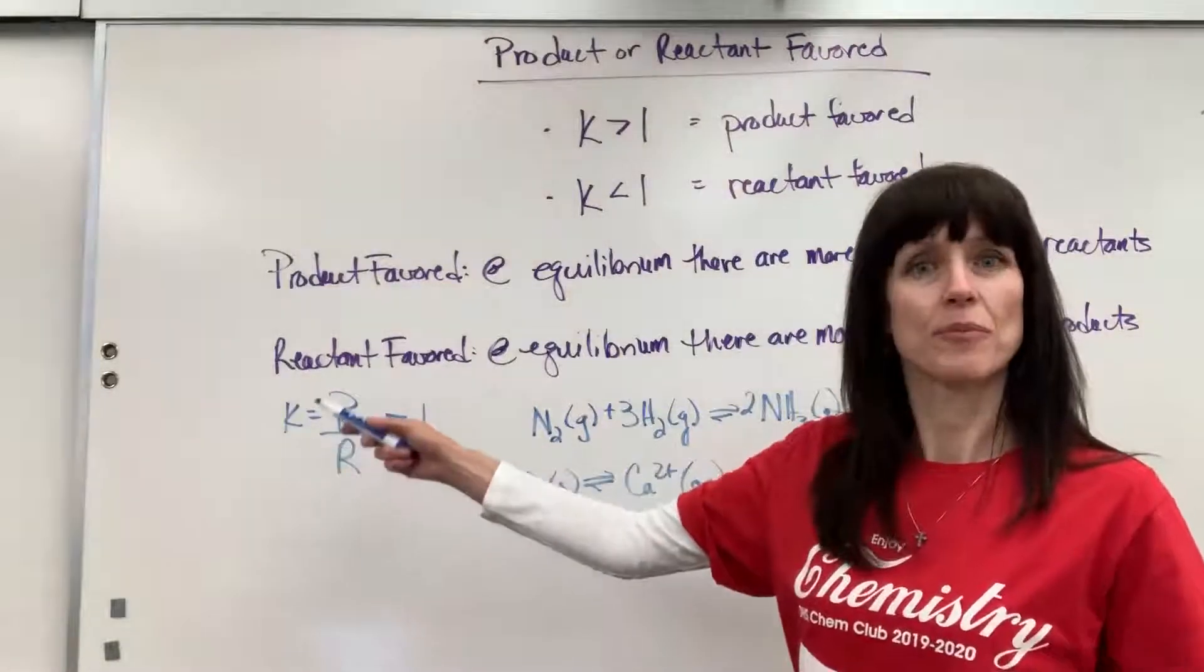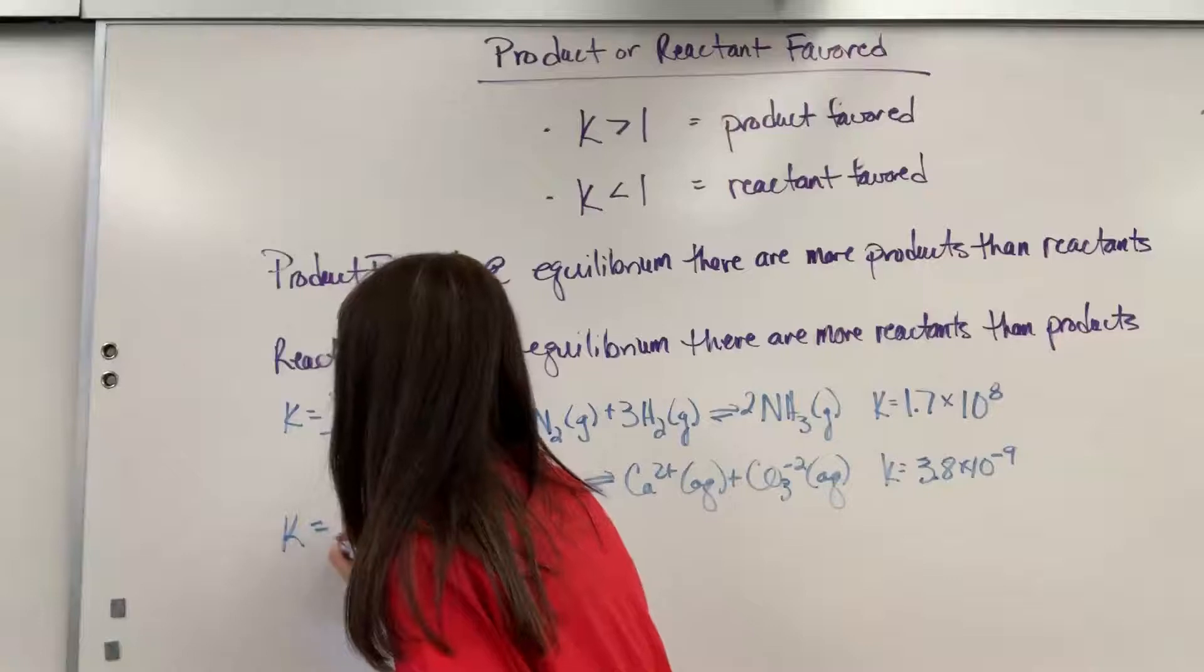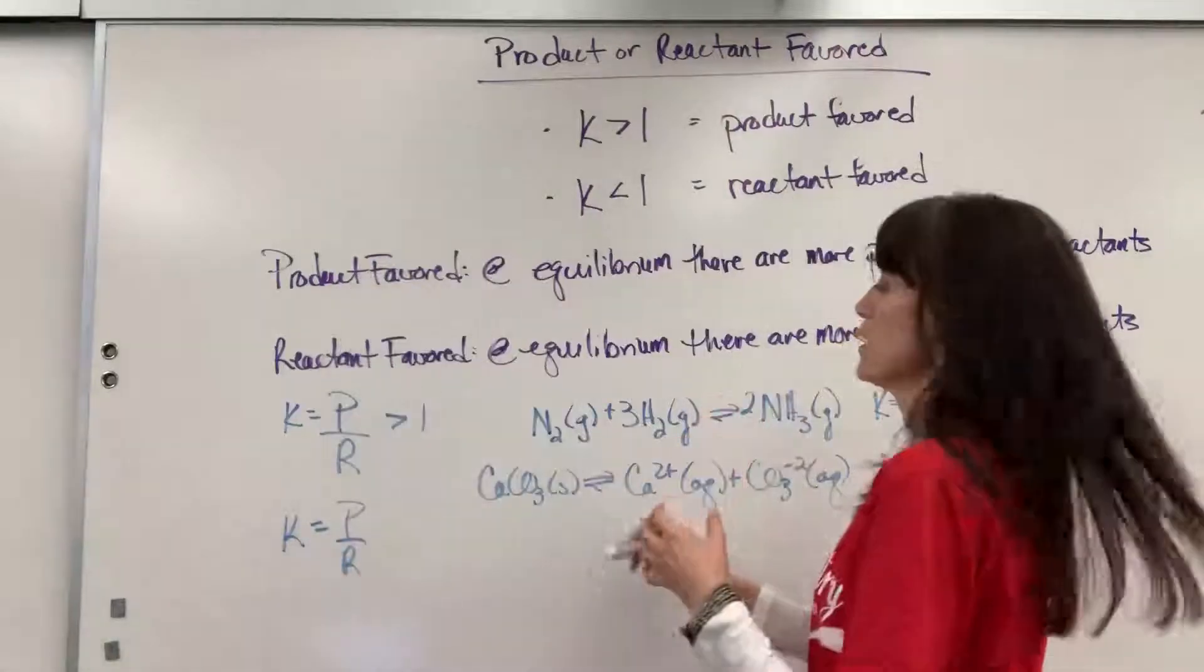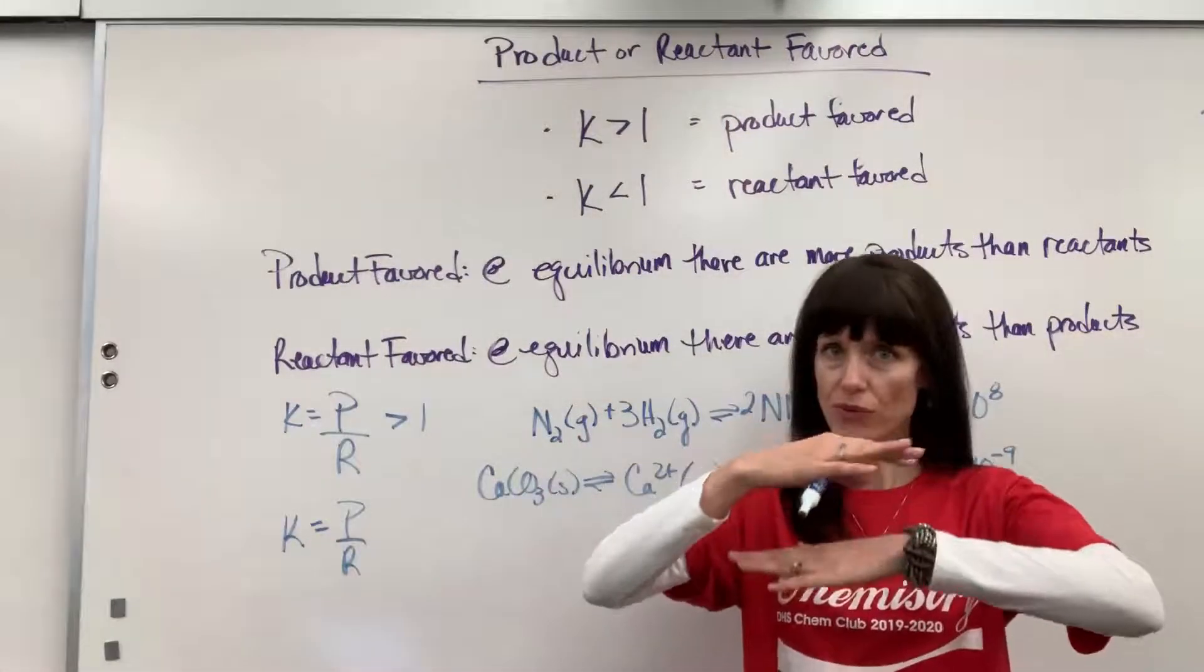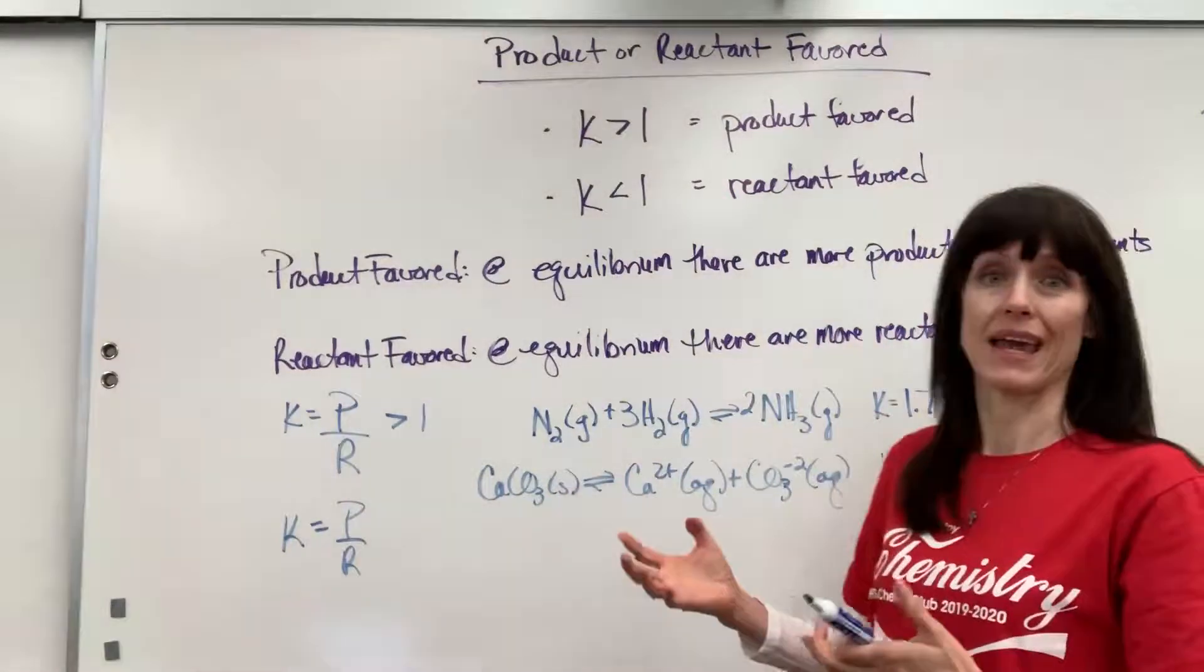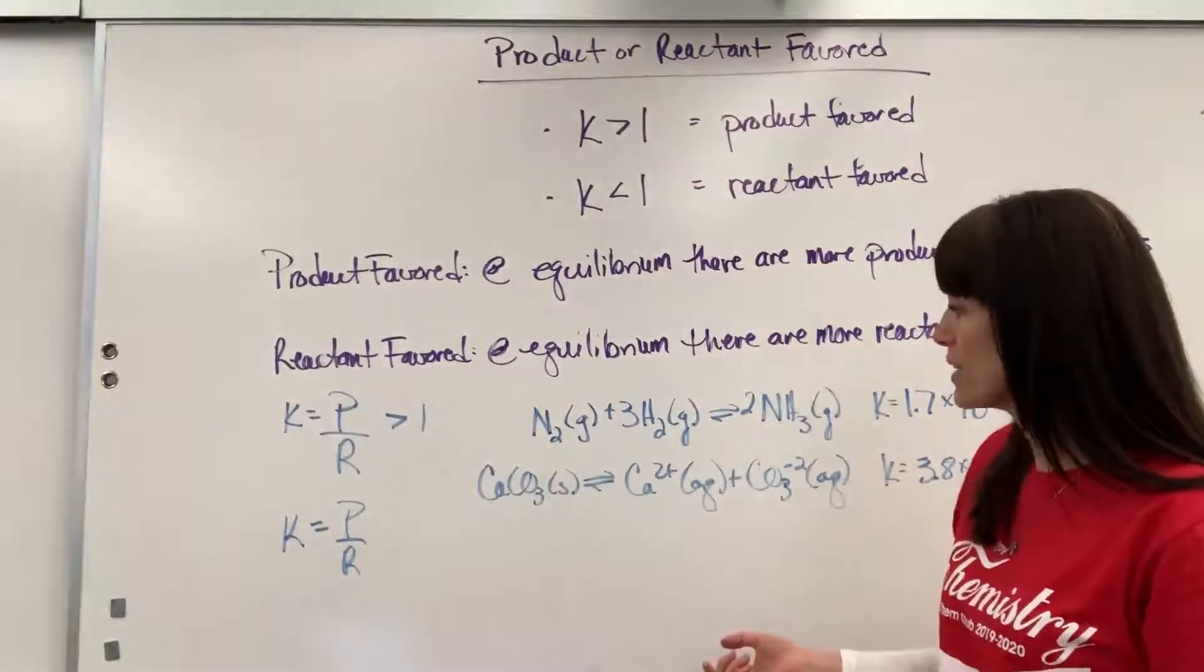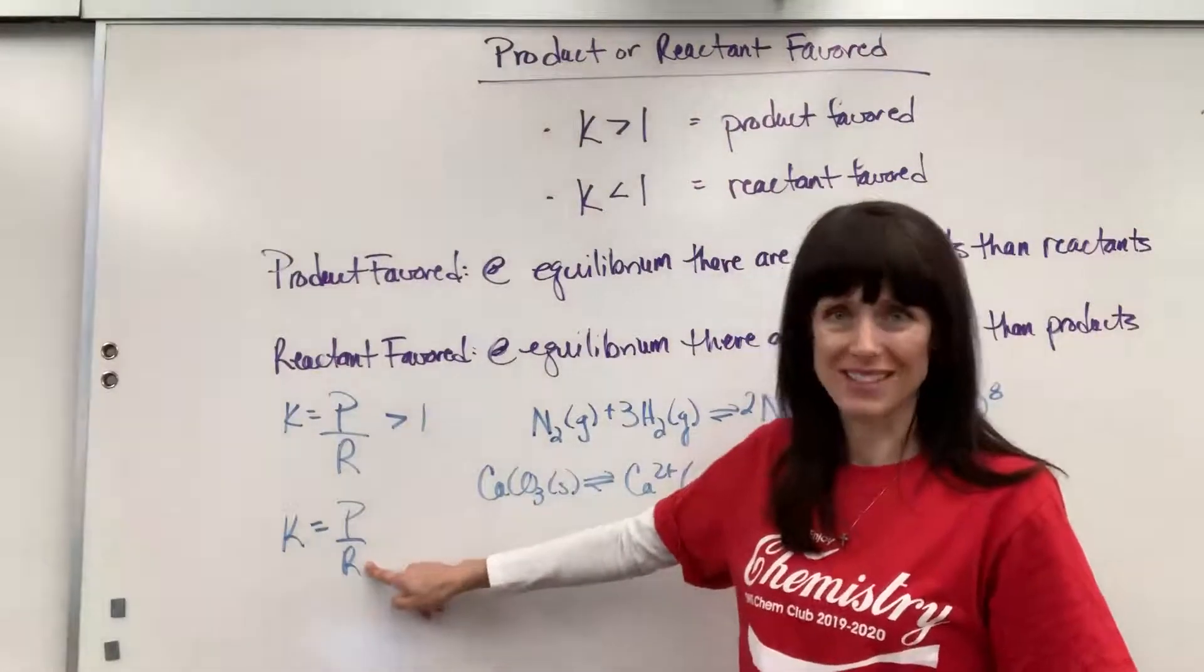Let's look at our products over reactants again. So again, equilibrium, it's products over reactants. So we reach this beautiful equal rate, forward and reverse. And when we count the amounts, how much do we have of reactants? How much do we have of products? There's a huge amount of reactants here.